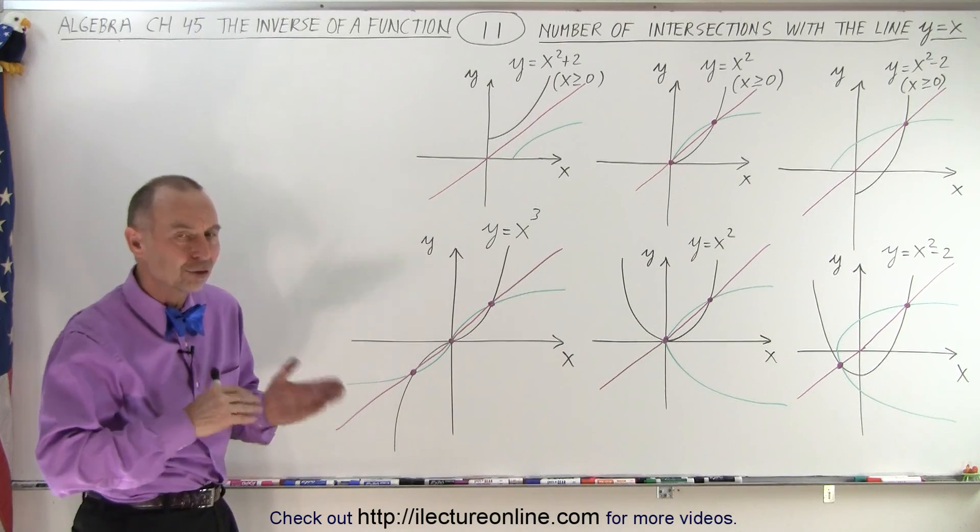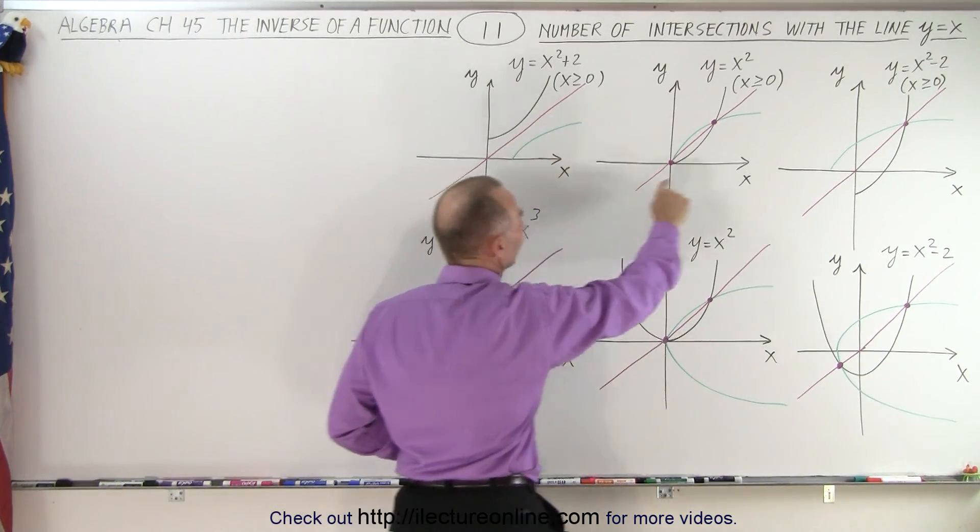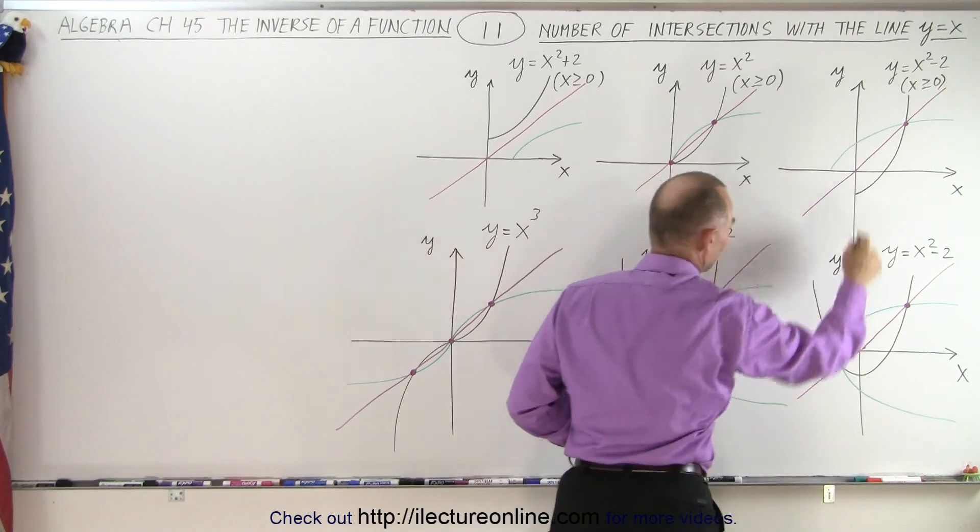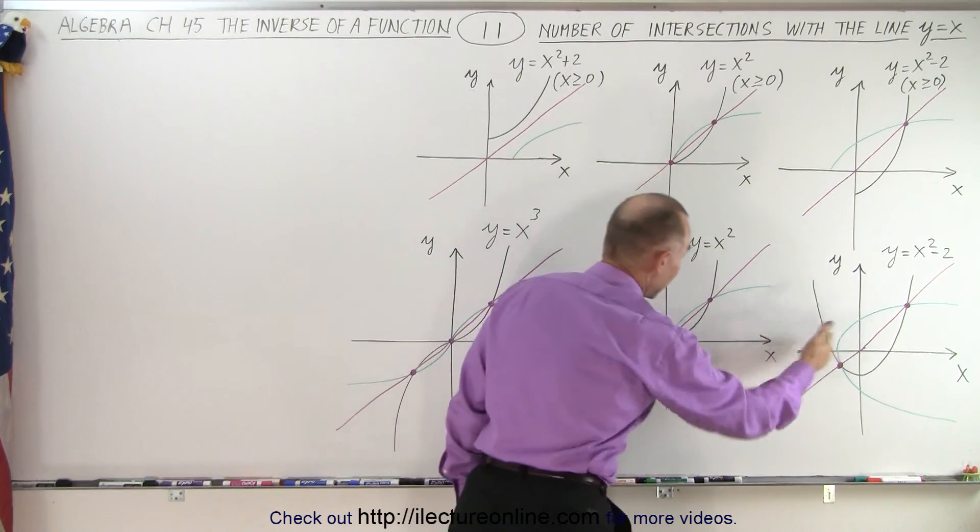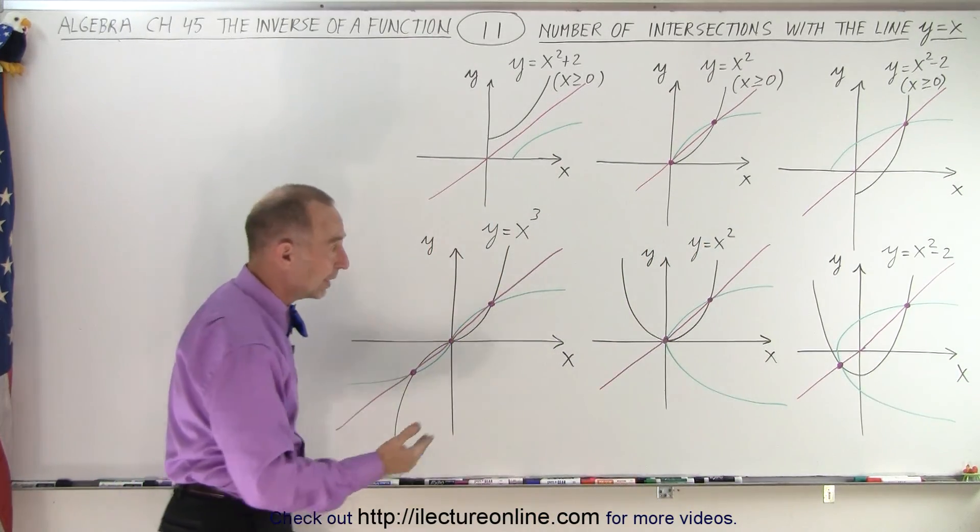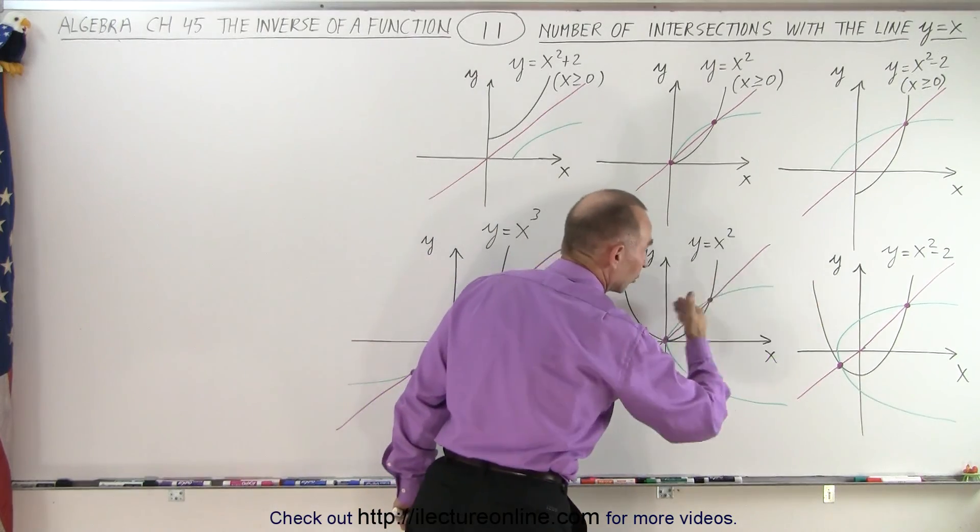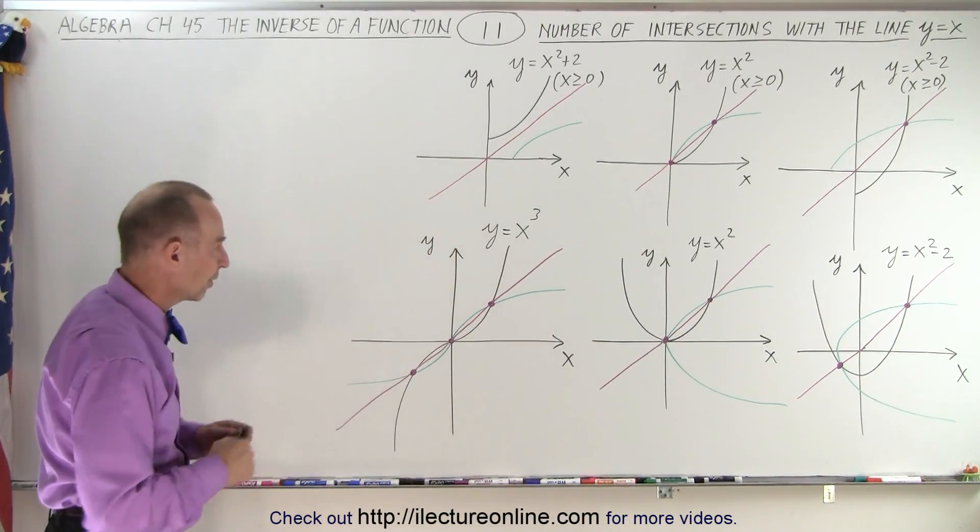Now notice that if we draw the inverse of the function, these are the green lines, there's the inverse of the function, the inverse, the inverse, inverse, inverse, and inverse. Notice that in these two cases right here, the inverse of the function is not a function, it's a relation because we did not have a one-to-one correspondence or a one-to-one function of those two examples.